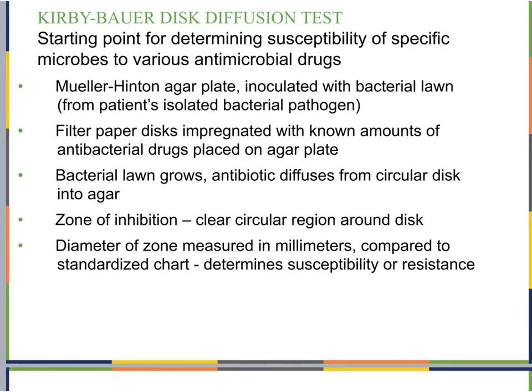We take the Mueller-Hinton plate and inoculate it with a bacterial lawn from the patient's isolated bacterial pathogen. We find the pathogen in the patient's sample, isolate it, grow it up, take a sample, and swab the entire plate with that bacteria — not for isolation, but to create a bacterial lawn covering the whole plate. Then we take filter paper discs that are either purchased already impregnated with the antimicrobial or impregnated yourself if you have it in liquid form.